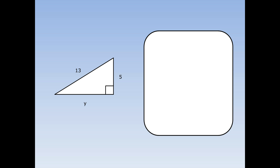Here's another example. Again, I've been asked to find one of the shorter sides, so I'm going to write Pythagoras' theorem like this: A squared plus B squared equals C squared. This time I think I'll call B the thing that I'm missing. So A equals 5, B is the thing I'm trying to find out, and C, the hypotenuse, is 13. 5 times 5 is 25. Still don't know B squared. 13 times 13 is 169.